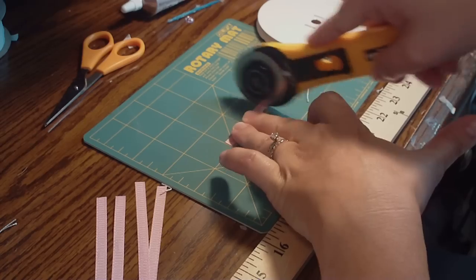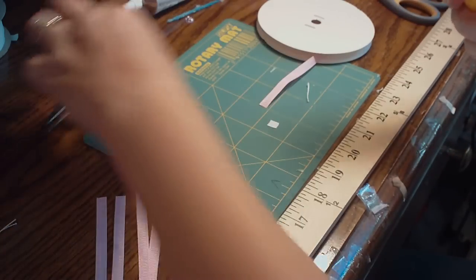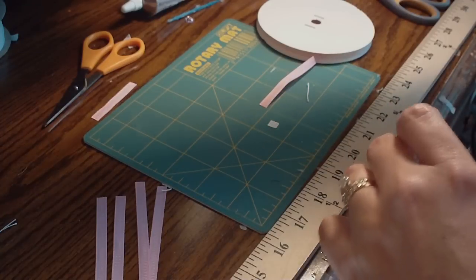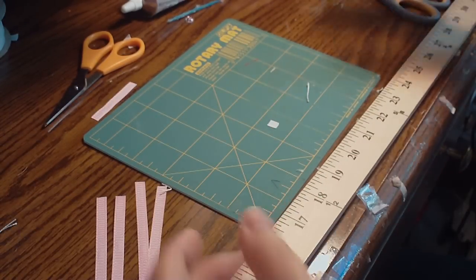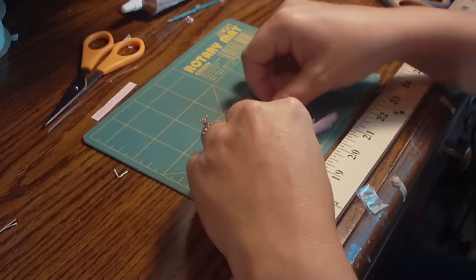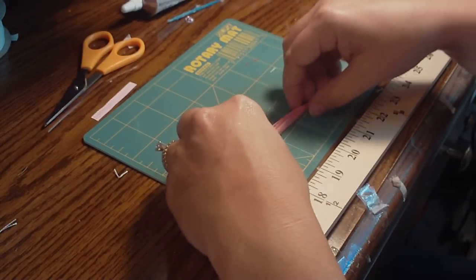This is the little piece that's extra that attaches, will help attach the flower to whatever we're going to attach it to, which today we're going to do an alligator clip. So you have your four pieces of ribbon.